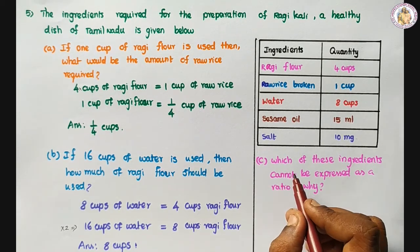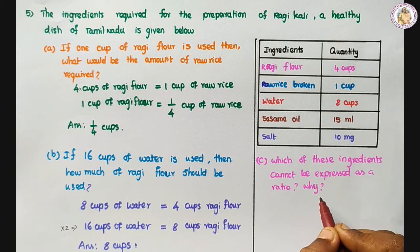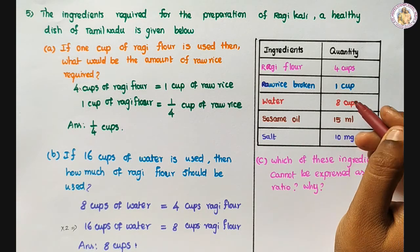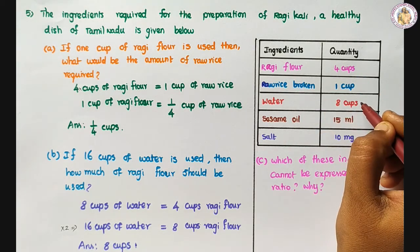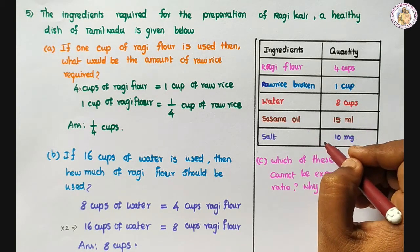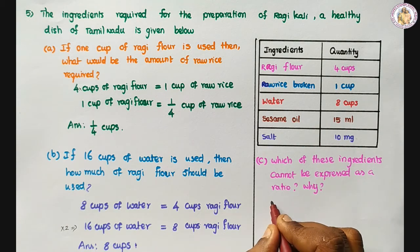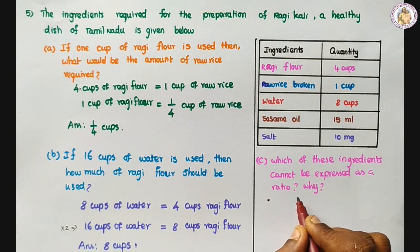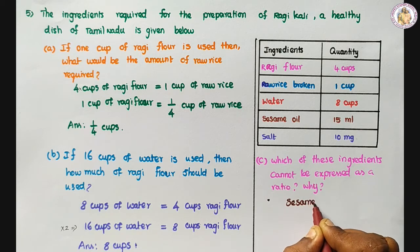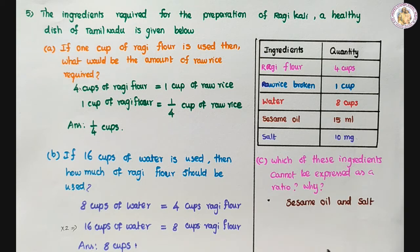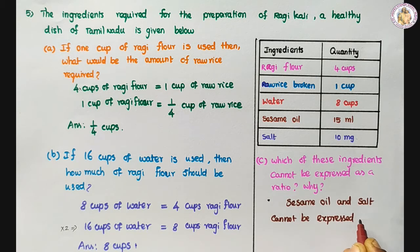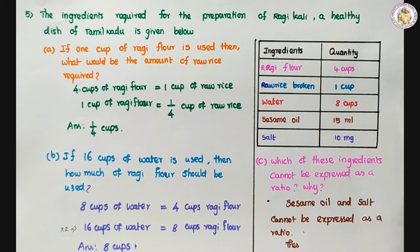Third subdivision: which of these ingredients cannot be expressed as a ratio, and why? The quantities of ragi flour, rice, and water are in cups. Sesame oil is in milliliters and salt is in milligrams. Sesame oil and salt cannot be expressed as a ratio because these are in different units.